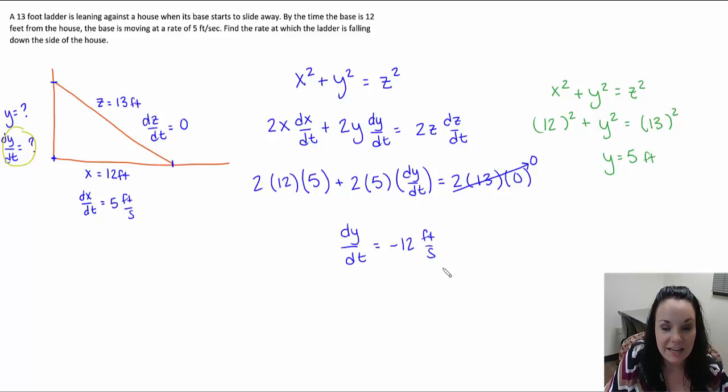When I go ahead and multiply things out and move things around, I end up getting a dy dt of negative 12 feet per second. And like we expected, it is negative because that distance along the side of the house is decreasing. The ladder is falling. And so that distance is decreasing with time, which makes sense that it's a negative number.